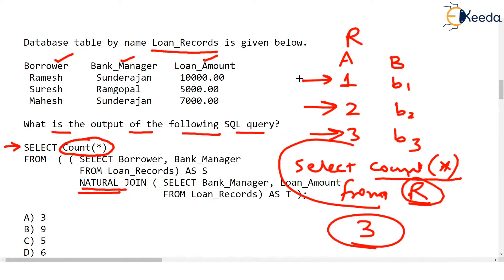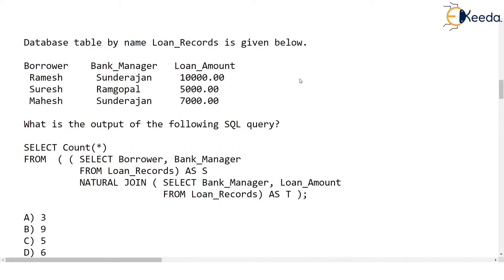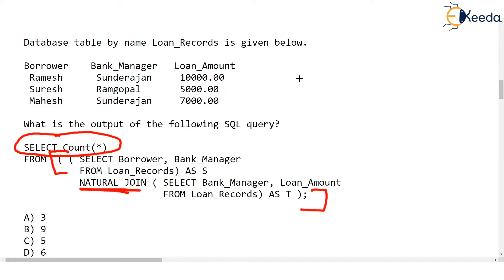In this question, the SELECT COUNT(*) at the beginning is simply going to count how many rows there are after doing the natural join of the two tables written inside the bracket. For doing natural join between two tables, there must be a column with the same name and the same domain — remember that.